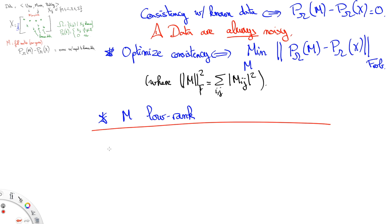Eventually, we thus obtain the following minimization program. We want to minimize a trade-off between how similar M is to the known data and the rank of the matrix M.